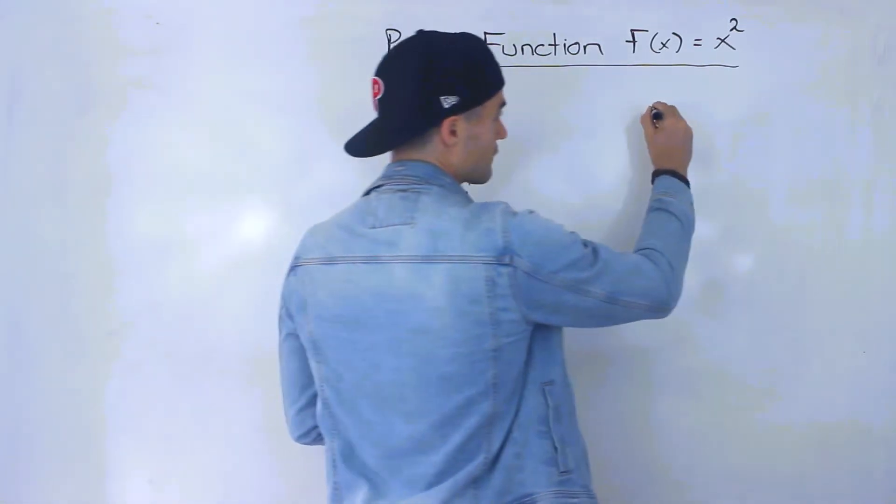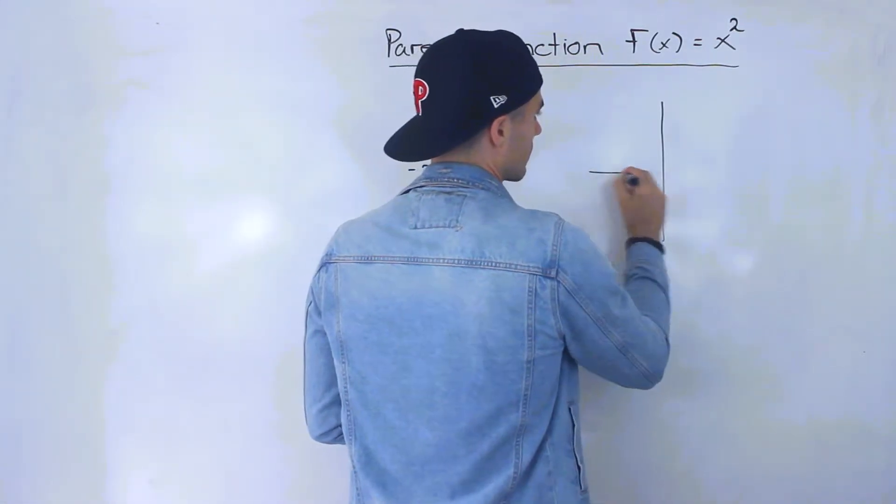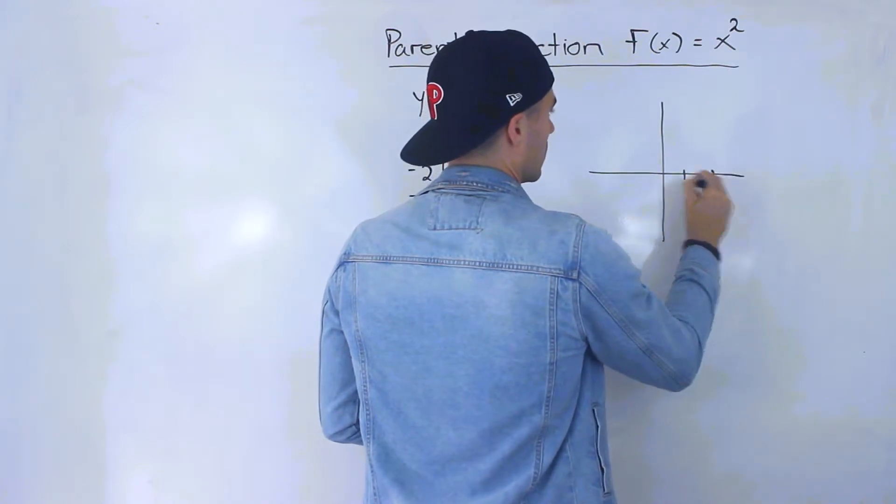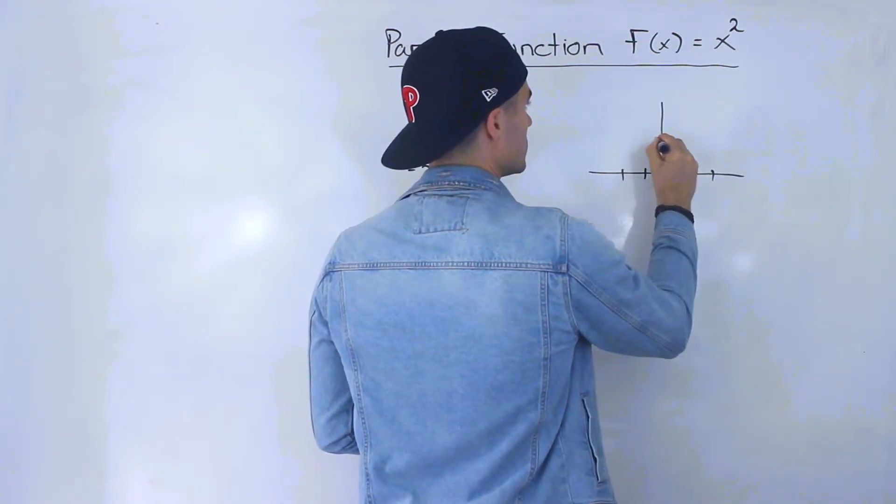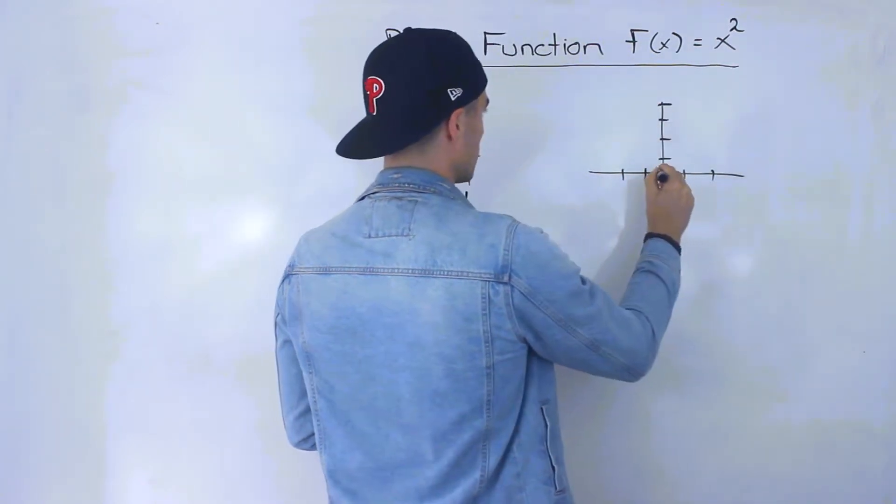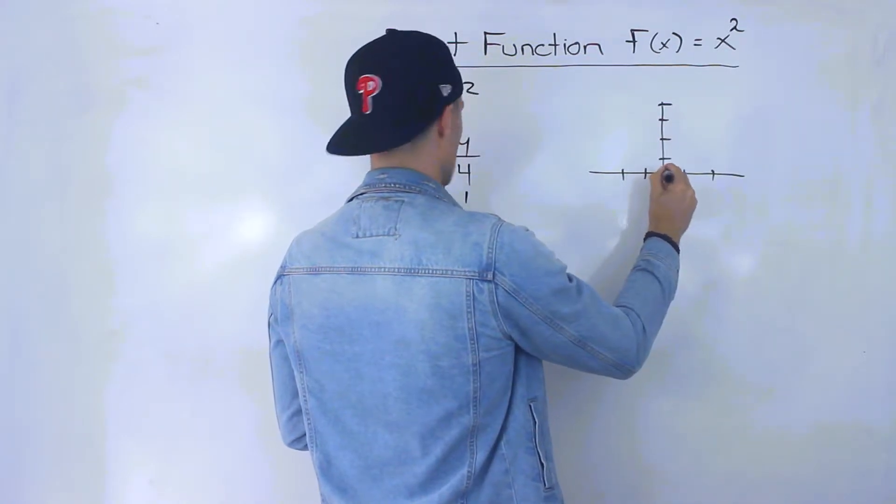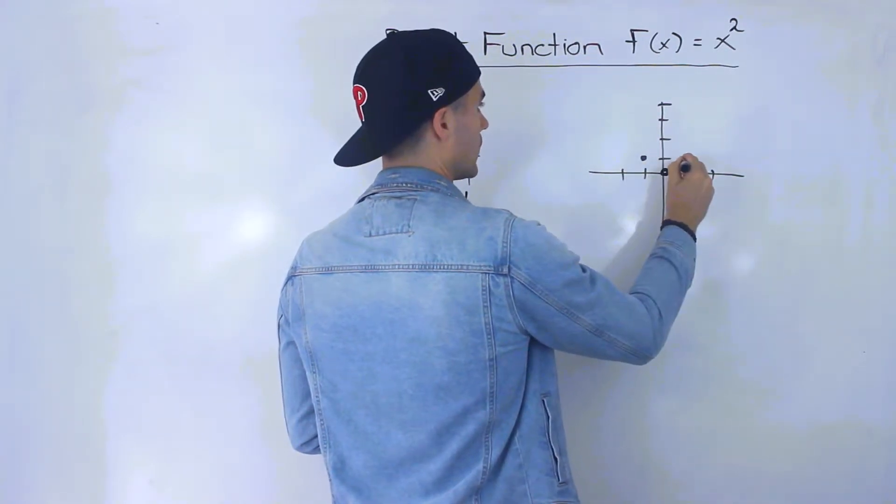So if we graph it, we'll have 1, 2, 3, 4. Notice that we got the point (0, 0), then (-1, 1) and (1, 1).